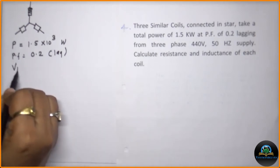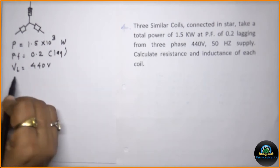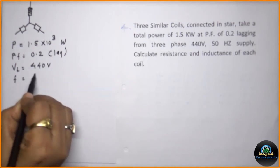Supply voltage which we normally mention by VL is 440 volts. Frequency given to us is 50 hertz.